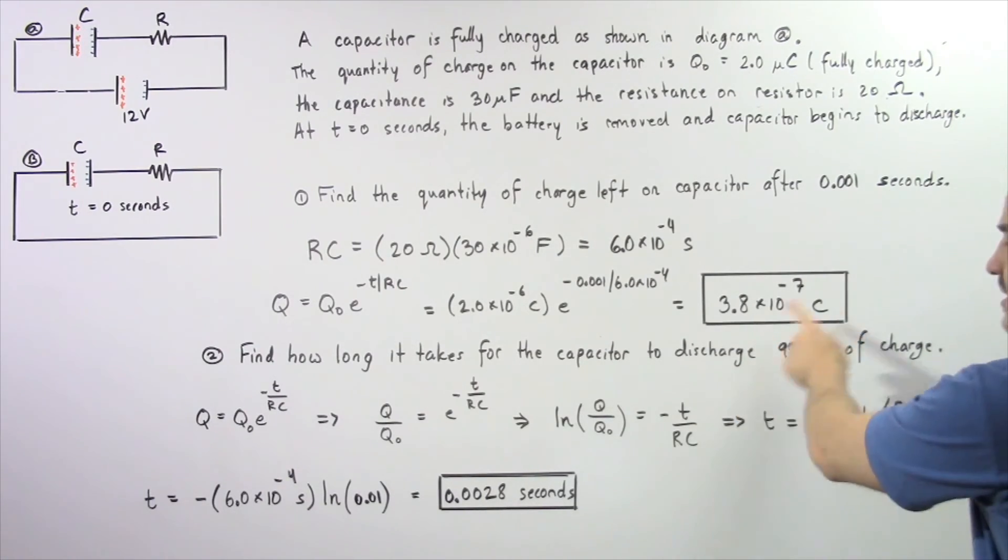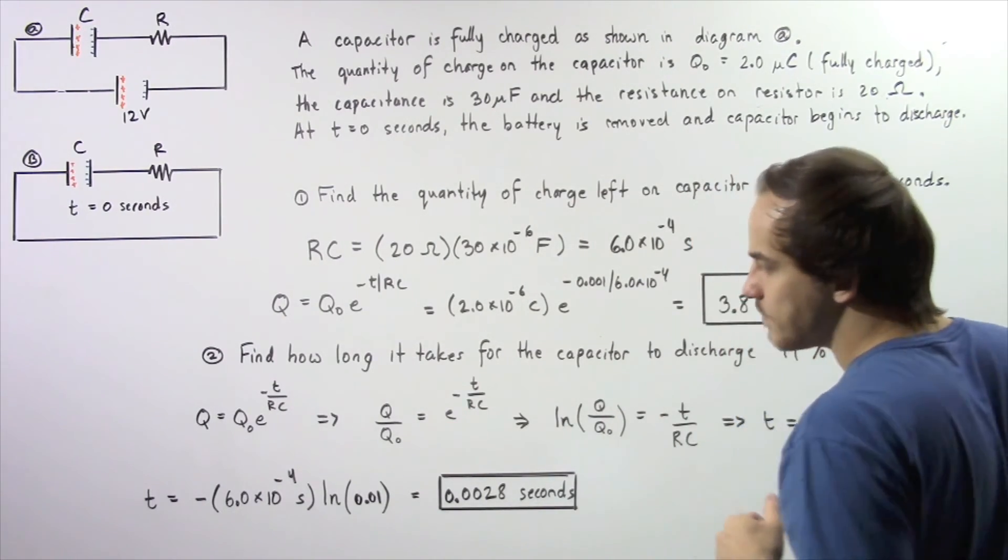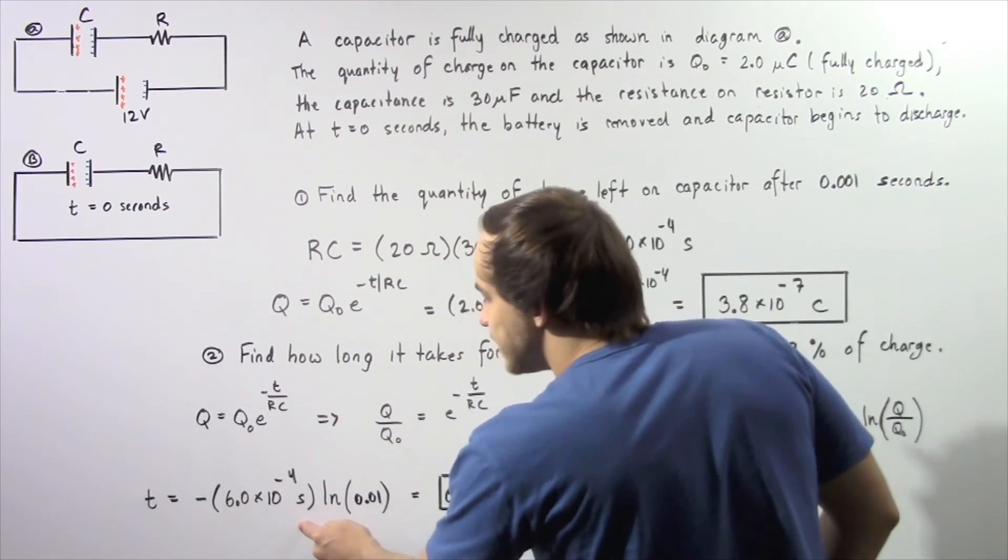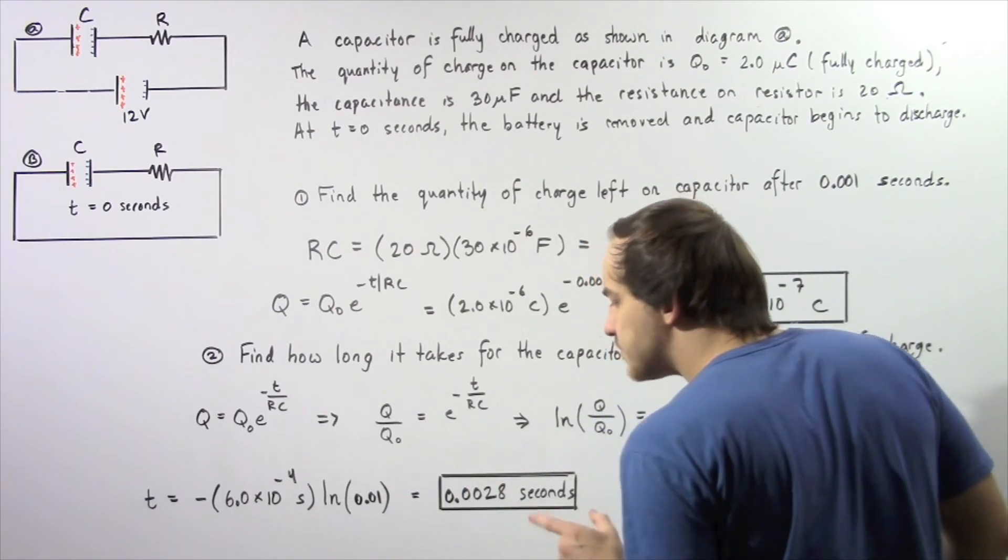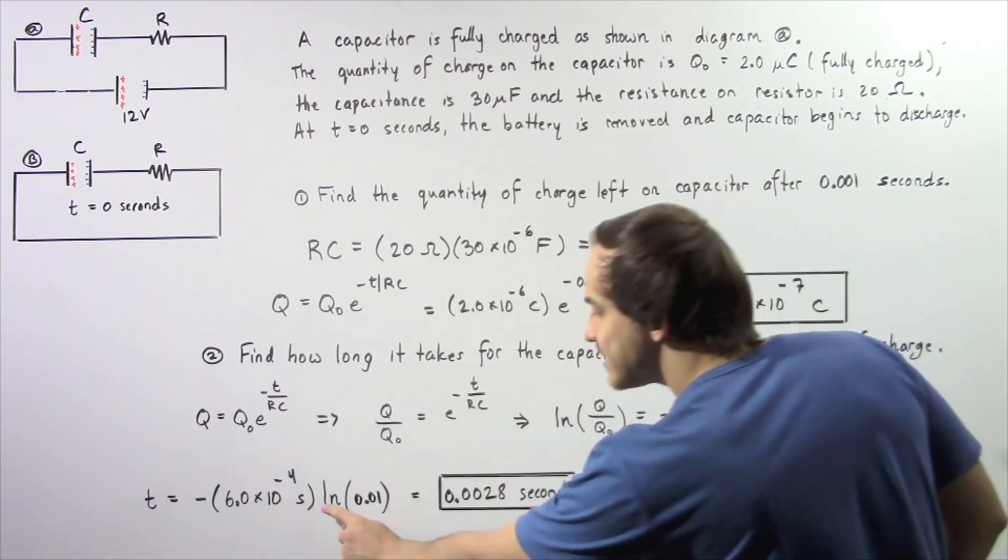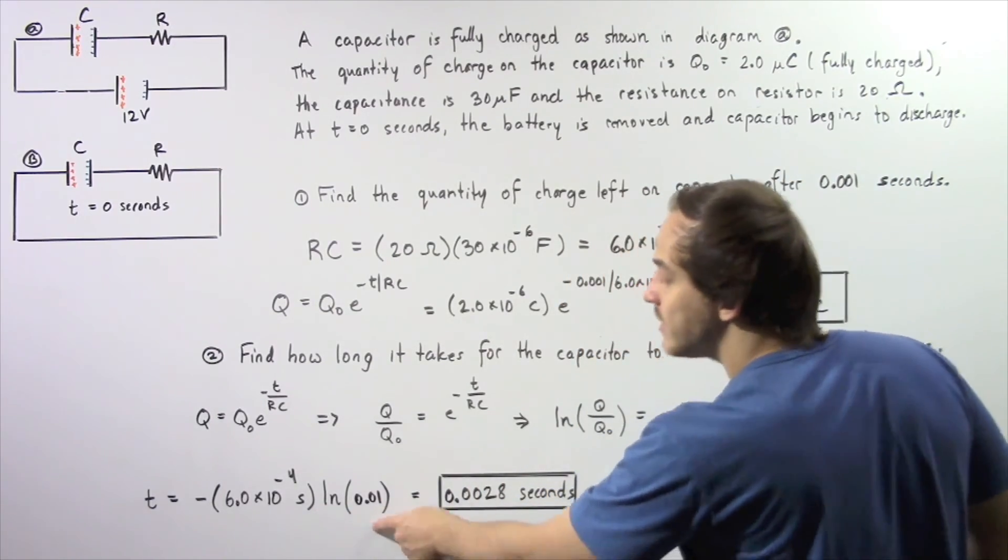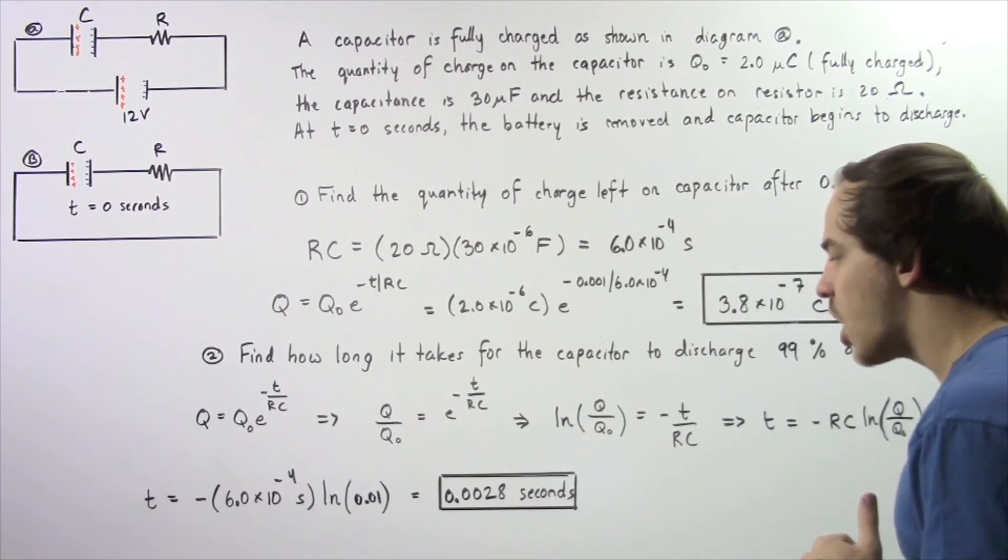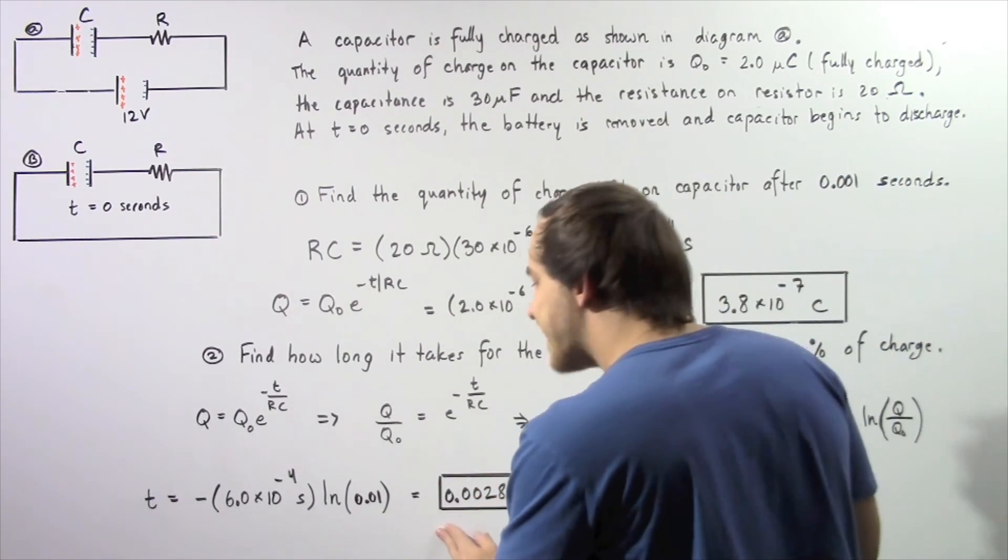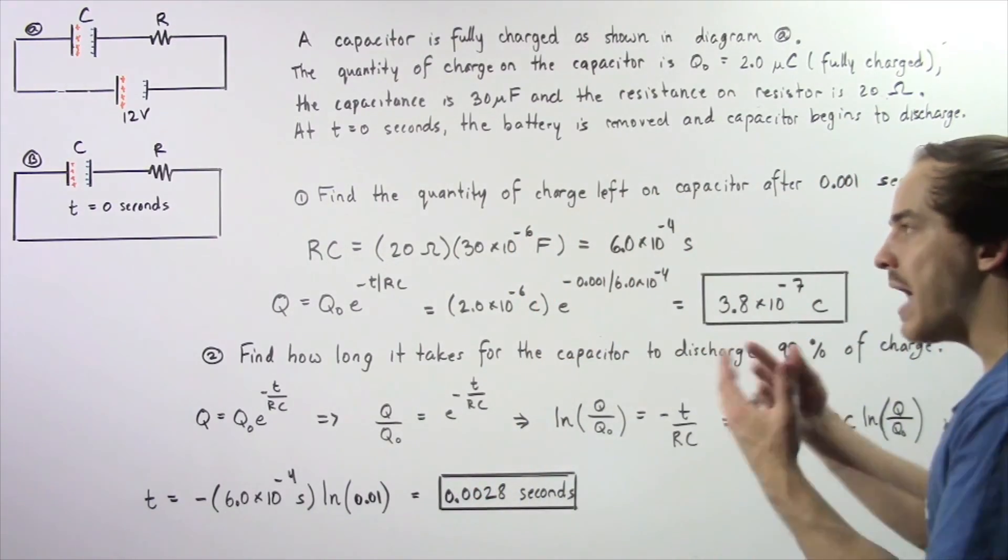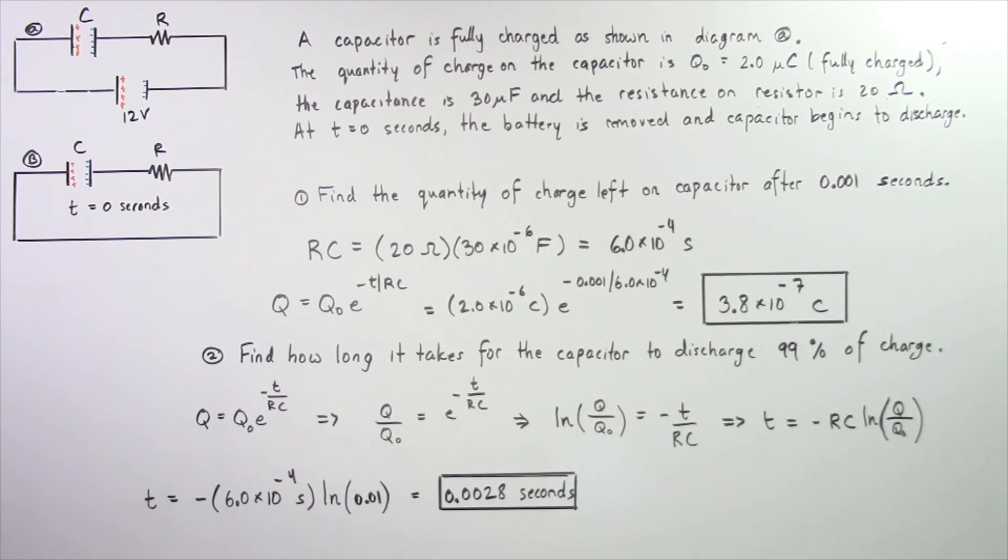Because 99% discharged means 0.01 remaining. So negative of this quantity multiplied by natural log of 0.01 gives us a positive value, because natural log of this quantity is negative. We get 0.002 seconds, so it takes this many seconds for our capacitor to discharge 99% of its electric charge. Thank you very much.